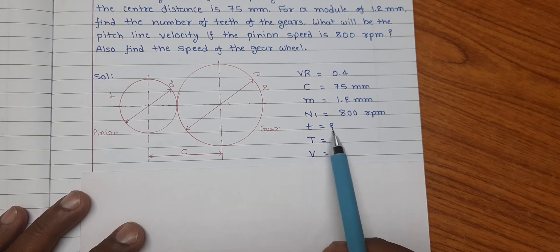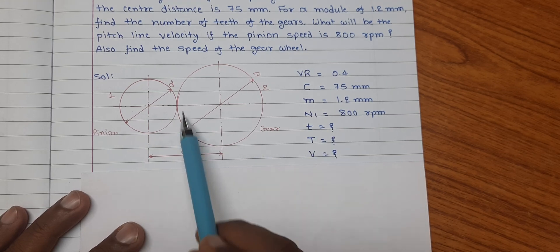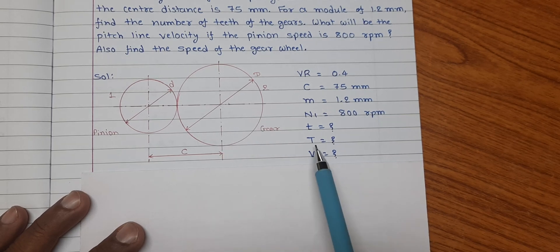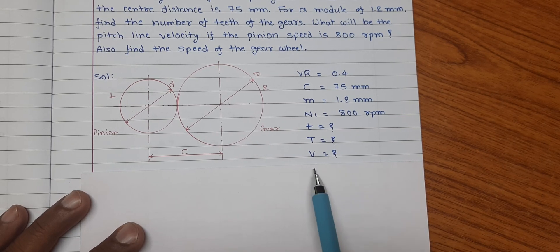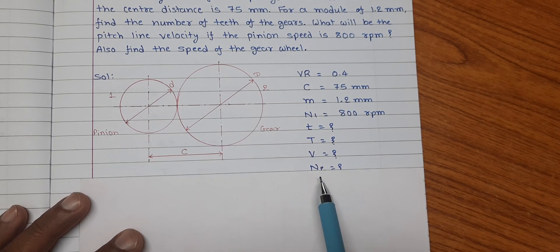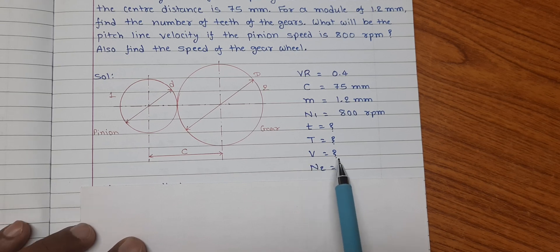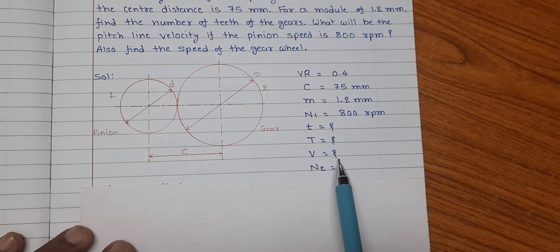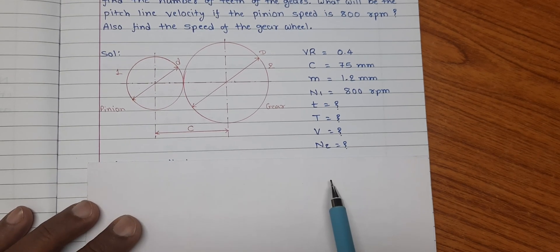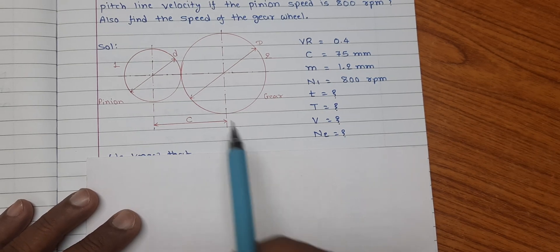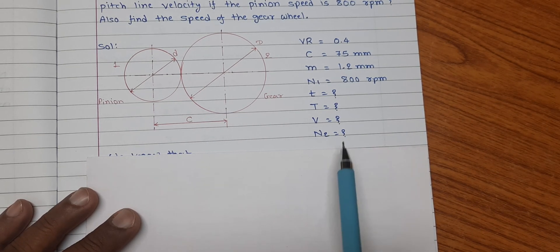We have to find: the number of teeth of the pinion, denoted by small t; the number of teeth of the gear, denoted by capital T; the pitch line velocity v; and the speed of the gear n2.